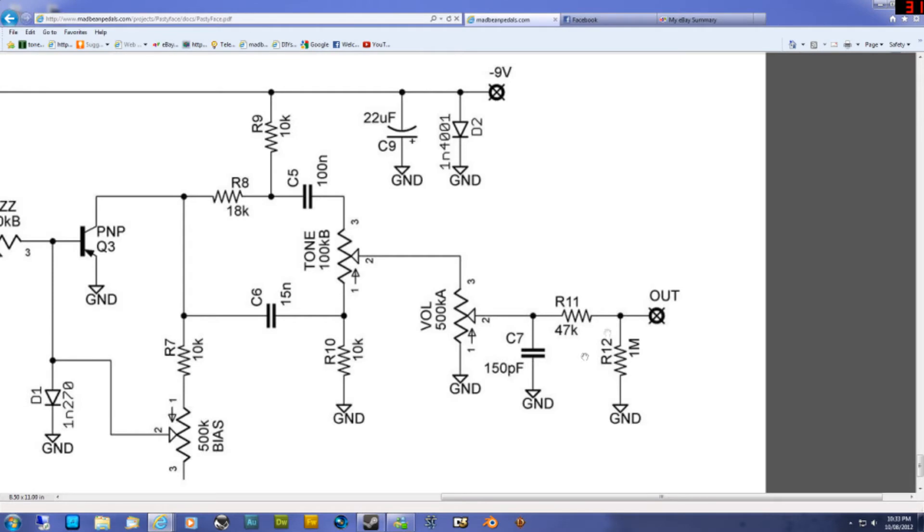On the schematic you can see R11 47K - that's the one I removed. I removed that to increase the output, which it does slightly, but I also found it improved the clarity like I was saying before quite a bit. It restores a bit of top end. You may not actually like that, but I would definitely suggest giving it a go. I just think it sounds clearer.